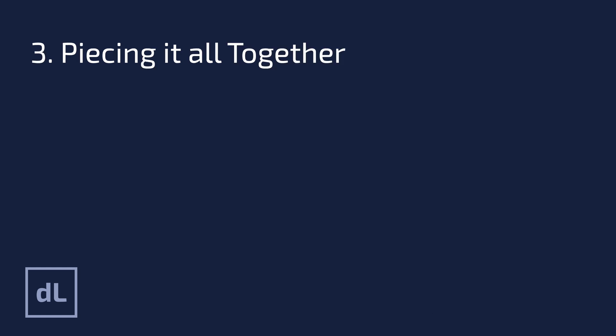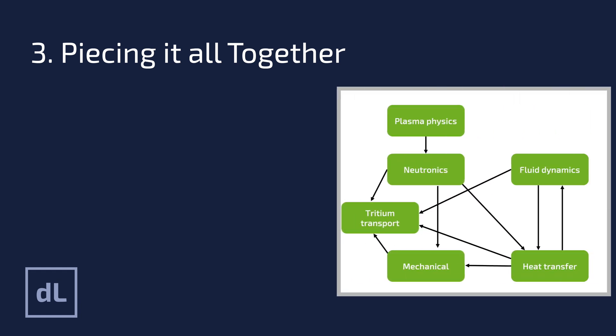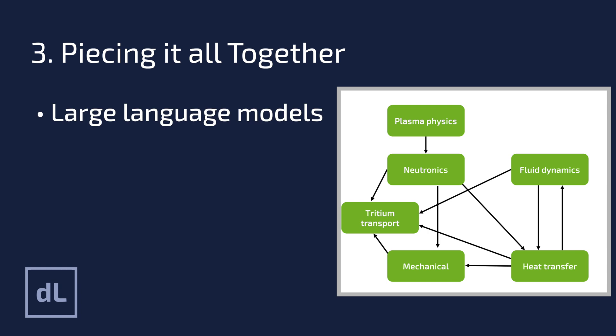Finally, we'll take a step back and look at the big picture, investigating how we can connect up what we've learned from different theories, models and experiments. Exploring things like using large language models to make access to fusion data easier or developing surrogate models and uncertainty quantification methods for integrated systems or constructing digital twins.